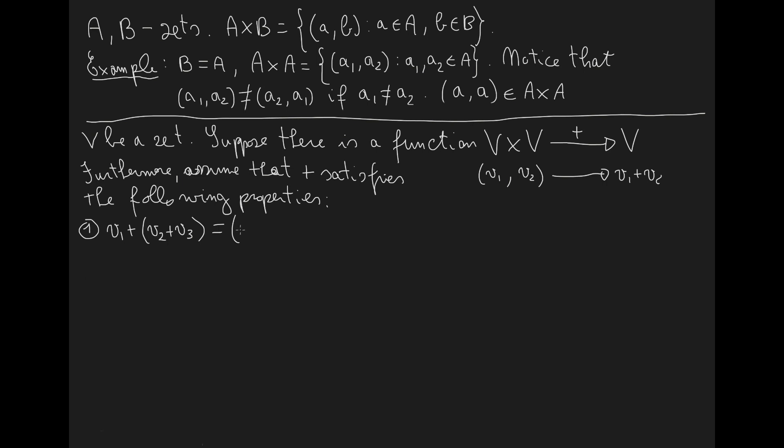the element V1 summed with V2, and this particular element summed with V3. So the equality of these two elements of V for each V1, V2, V3 in V is called associativity of the function plus.